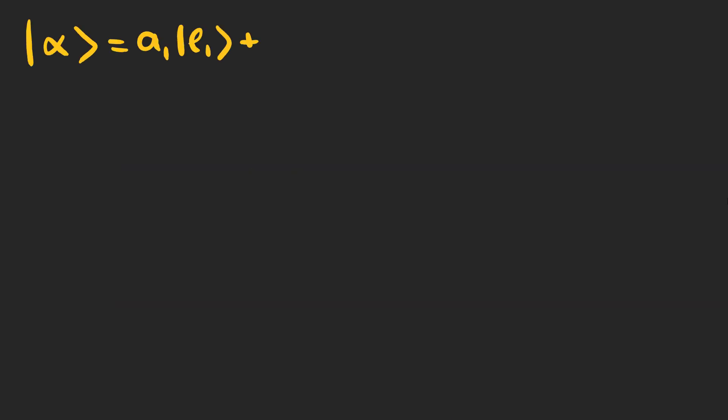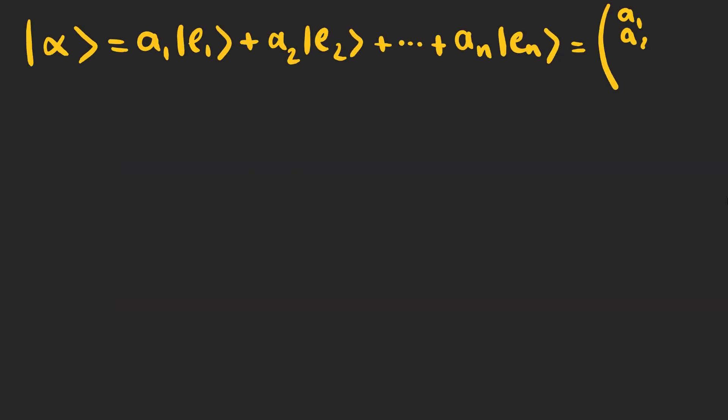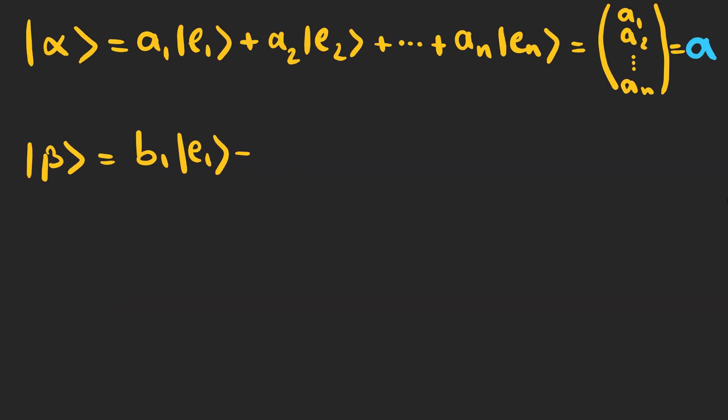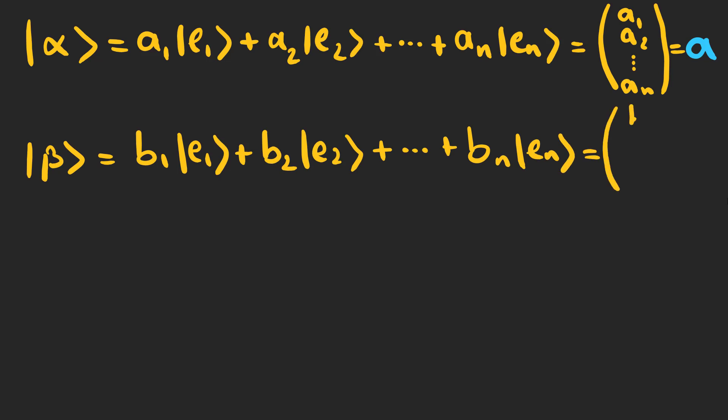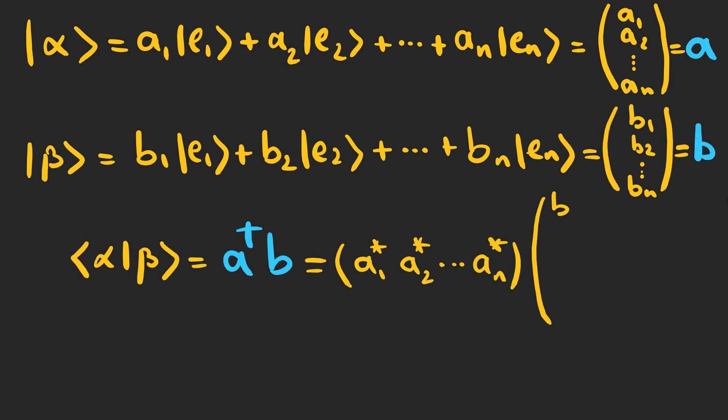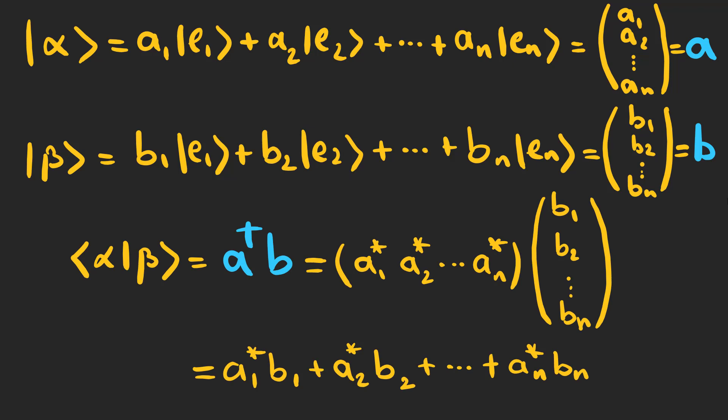Take two vectors alpha and beta, which can be written as column matrices A and B respectively. The inner product of alpha and beta can be written in matrix form as A-dagger times B, which yields a complex number.